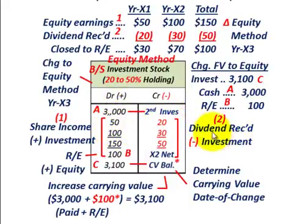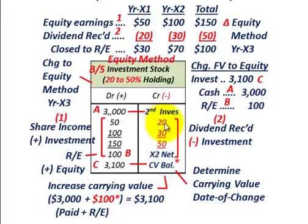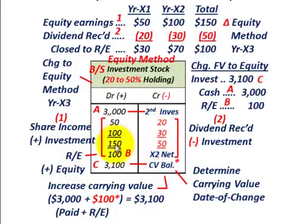The dividends received reduce the investment account: $20,000 in year X1 and $30,000 in year X2. Totaling up the net amounts: an increase from share of net income of $150,000 ($50,000 plus $100,000), and a decrease for dividends received of $50,000 ($20,000 plus $30,000). The net difference of $100,000 would increase our investment stock account.